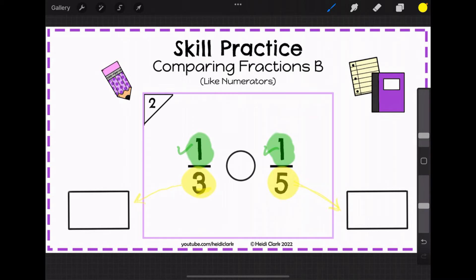So you're getting one piece either way but which rectangle is going to have big pieces and which rectangle is going to have small pieces if you're dividing it just by 3 or if you're dividing it by 5? Let's go ahead and see an example.